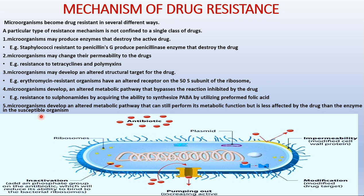Mechanism number five: microorganisms develop an altered metabolic pathway that can still perform its metabolic function but is less affected by the drug than the enzyme in the susceptible organisms — not bypassing, just modifying the pathway and continuing with slightly altered function. Additionally, efflux pumps pump antibiotics out of the cell after they enter; this increasing activity of active efflux of drugs is also a major mechanism of drug resistance.